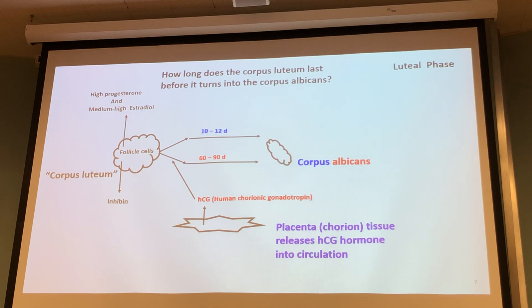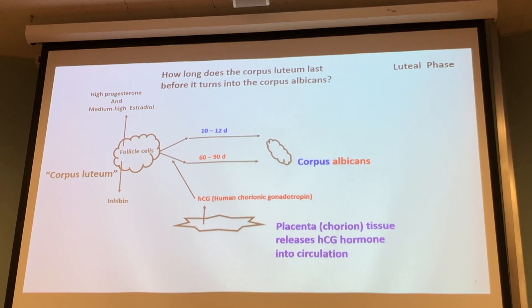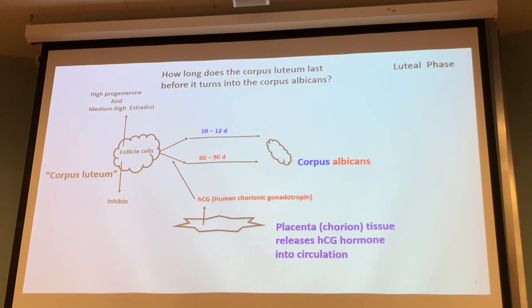How do women test to see if they're pregnant? Pregnancy tests detect HCG — that's what they're looking for. When they detect that, it confirms pregnancy.